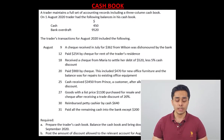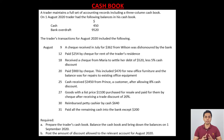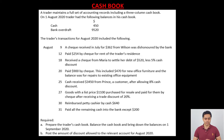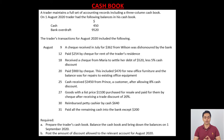Let's begin. The question gives opening balances on 1st August 2020: cash 450, bank overdraft 9520. Transactions are given for the month, and we're required to prepare the trader's three-column cashbook, balance it, and bring down the balance on 1st September. Part B requires us to post the discount allowed amount for the month to the discount allowed account.